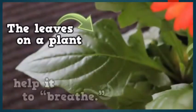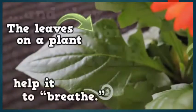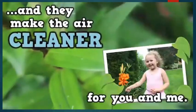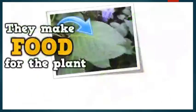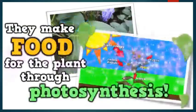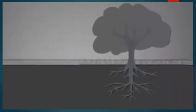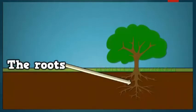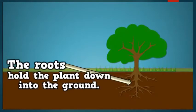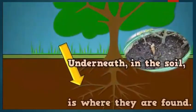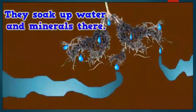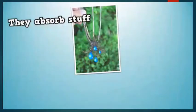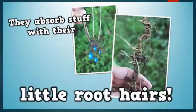The leaves on a plant help it to breathe and they make the air cleaner for you and me. They make food for the plant through photosynthesis. The roots hold the plant down into the ground — underneath in the soil is where they are found. They soak up water and minerals there, absorbing nutrients with their little root hairs.